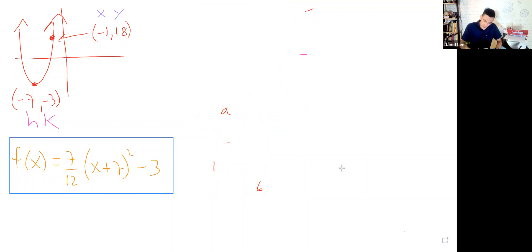Let's suppose we want to find the y-intercept. Recall that to find your y-intercept, you put 0 in for x. Let's write the equation again, but instead of x, put 0. This gives us y = (7/12)(0 + 7)² - 3. Just use your calculator for that.